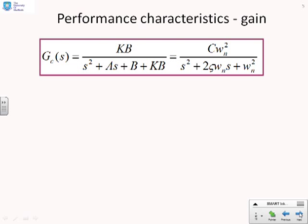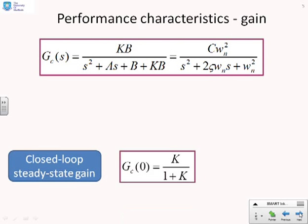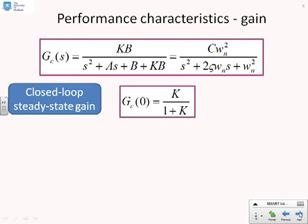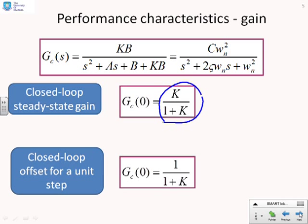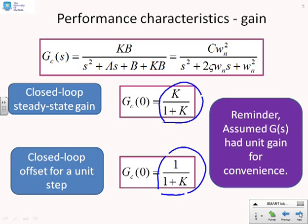Let's look at gain first. The closed-loop transfer function is kb over s squared plus as plus b plus kb. The steady-state gain is obtained by substituting s equals 0, giving k over 1 plus k. Alternatively, the closed-loop offset for a unit step is 1 over 1 plus k. Just as with first-order systems, the steady-state gain has a simple dependence on the proportional compensator k. Note that we've assumed G(s) has unit gain; these relationships would be slightly different otherwise.